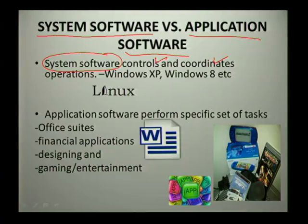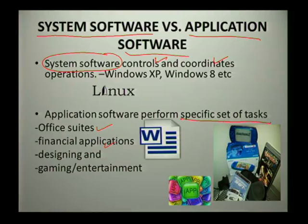The second type is application software. Application software is designed to perform a specific set of tasks. Examples include your office suite — where you can use Word and Excel — as well as financial applications, design software, and gaming and entertainment applications. Those are some of the examples of application software as well as system software. Thank you, we will see you next time.